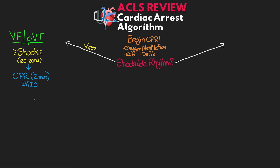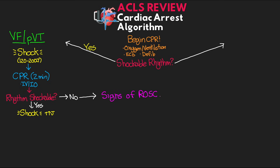After the 2 minutes, do another rhythm check: is the rhythm shockable? Based on that assessment, there are two potential paths. If the rhythm is still shockable, deliver a shock and begin stepping up the joules on the defibrillator until you reach the max. If the rhythm is not shockable, assess for return of spontaneous circulation or ROSC. If there's no ROSC, move into the right branch of the algorithm. If we do have ROSC, we move into the post-cardiac arrest algorithm, which will be covered in a future lesson.